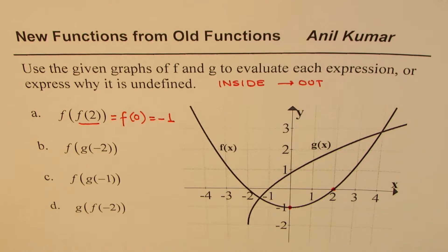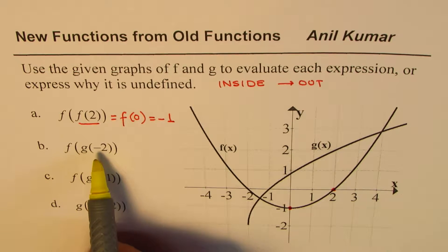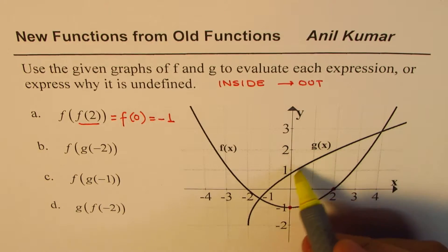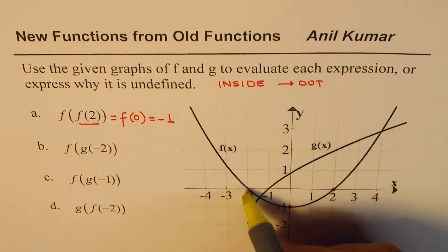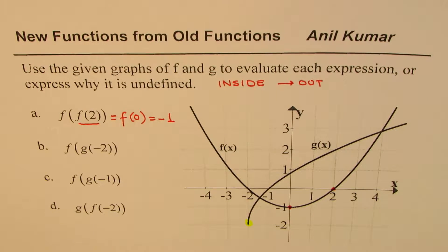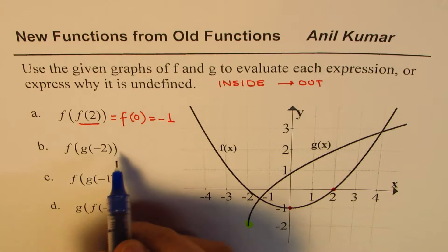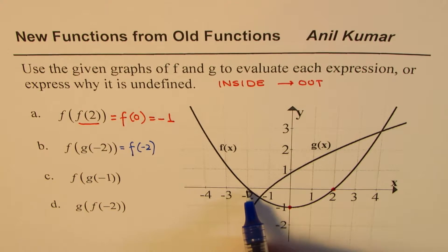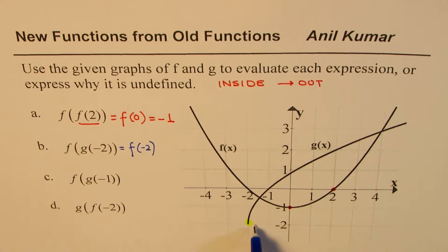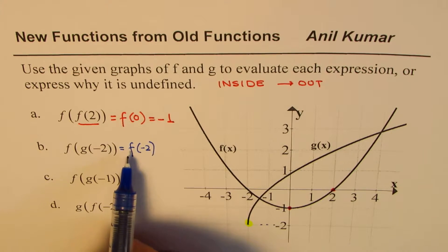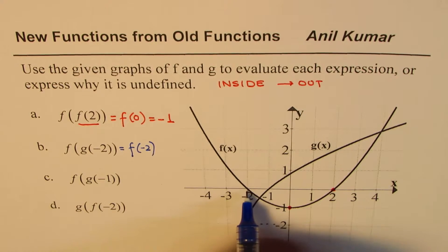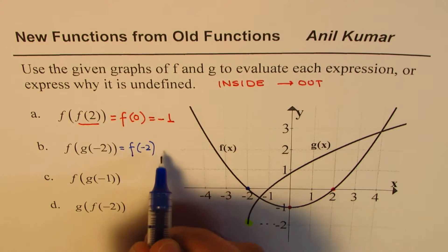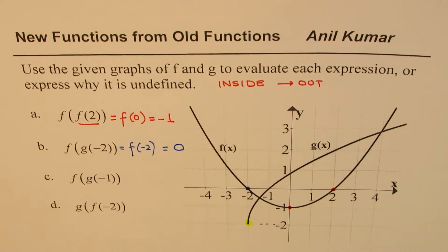Now let's do the next one which is f(g(-2)). Now g(x) is that square root transform function. At -2 the value here is -2. So we will write this function as equals to f(-2) since at -2 the value is -2. Now we have to read the value of the function parabola f(-2). At -2 the value is 0. So we get this as equal to 0. I hope the steps are absolutely clear.